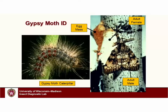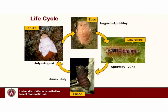Here are the other life stages. We have adult moths — the female is light colored, kind of whitish and pale, whereas the males are a darker beige to brown, in some cases almost blackish in color. And there are egg masses — we'll talk more about those in a bit, because the egg masses are really one of the reasons why this can be such an invasive pest to deal with.